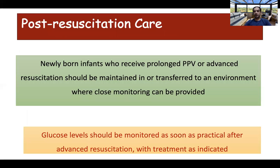All babies who receive prolonged positive pressure ventilation or advanced resuscitation should be shifted to an ICU for post-resuscitation care. These babies are prone to both hypoglycemia and hyperglycemia, and both can lead to impaired neurodevelopmental outcomes. They should therefore be vigorously monitored for glucose abnormalities and treatment instituted accordingly.